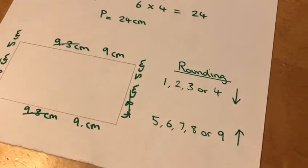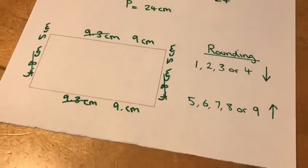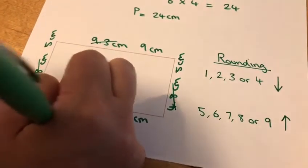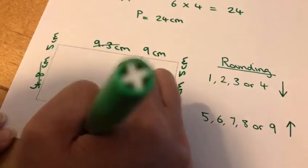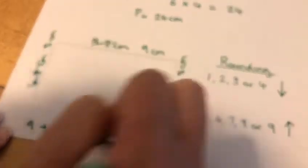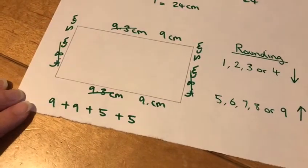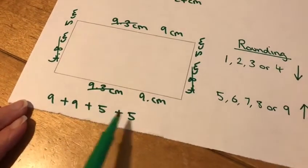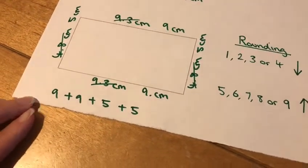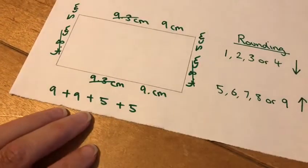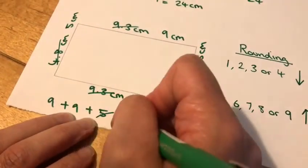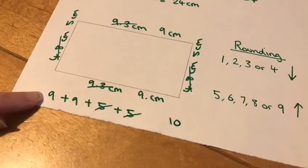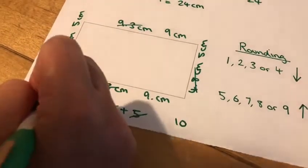So now the measurements that I need to add together are nine plus nine plus five plus five, and if I do that, I'm going to be able to work out the perimeter. I would probably start with the five and five because I know straight away that that makes ten. If I cross out my five and five, I will jot down ten. I also know that nine plus nine is 18.